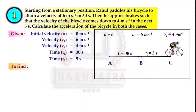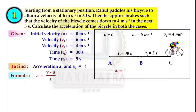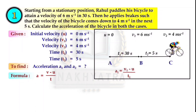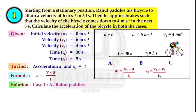We have to find out accelerations A1 and A2. The formula we use is a = (v - u)/t, that is acceleration equals final velocity minus initial velocity divided by time. For A1: A1 = (V1 - U)/T1. For A2: A2 = (V2 - V1)/T2. Now solving for case 1, A1 = (6 - 0)/30 = 0.2 meter per second square.